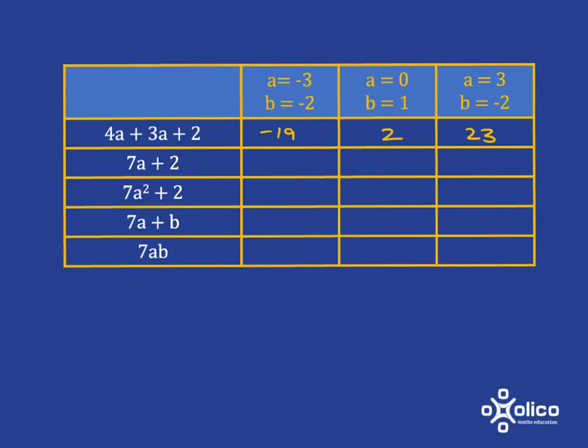For this next row, I am going to have 7 times 3 is negative 21 plus 2, then it's negative 19. And the rest are easy, we'll fill them in quickly.